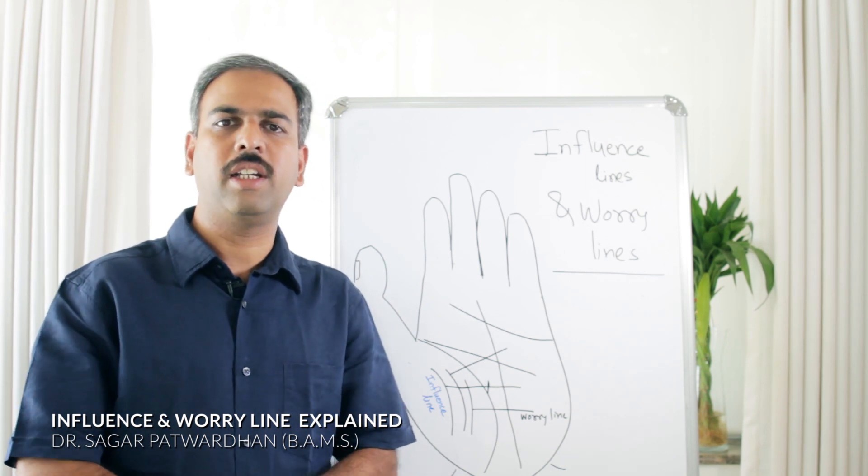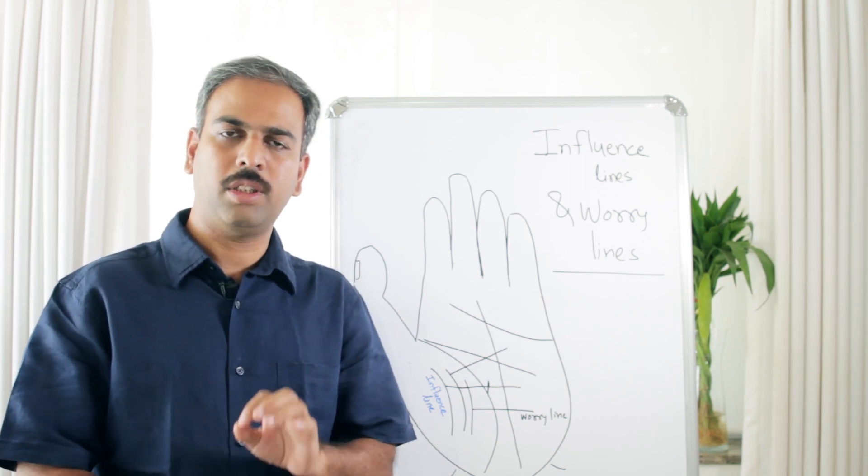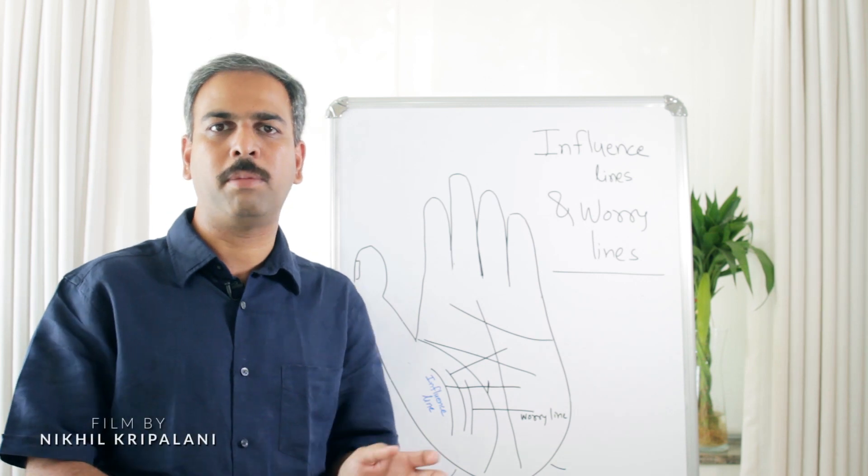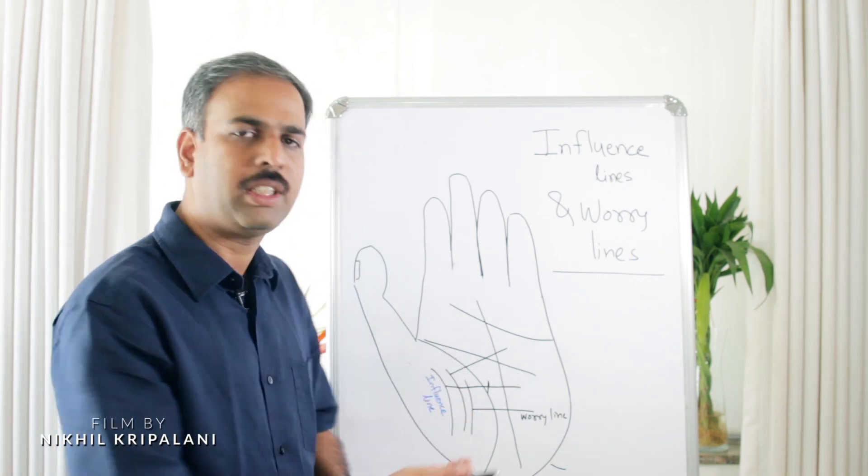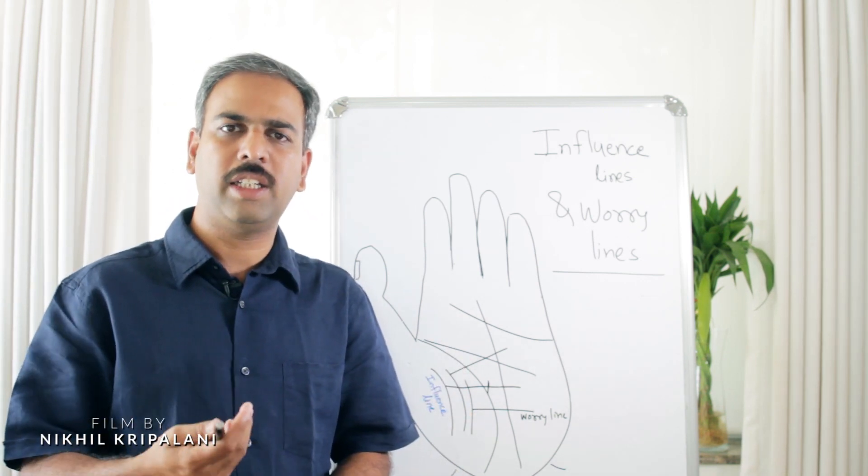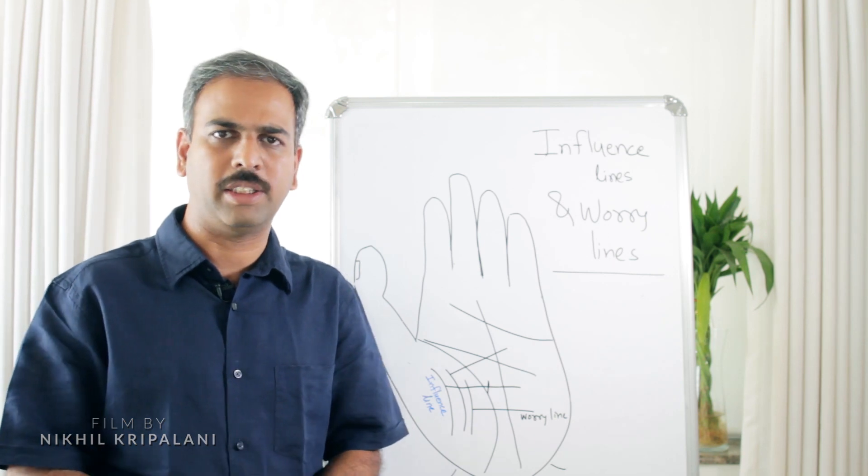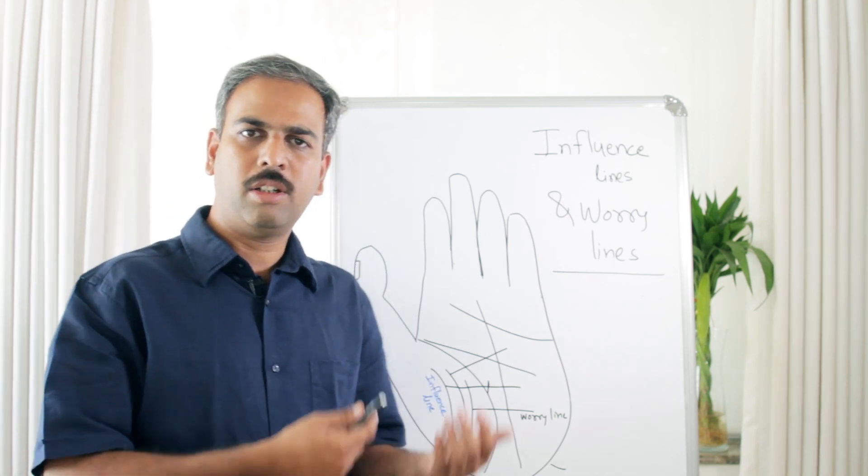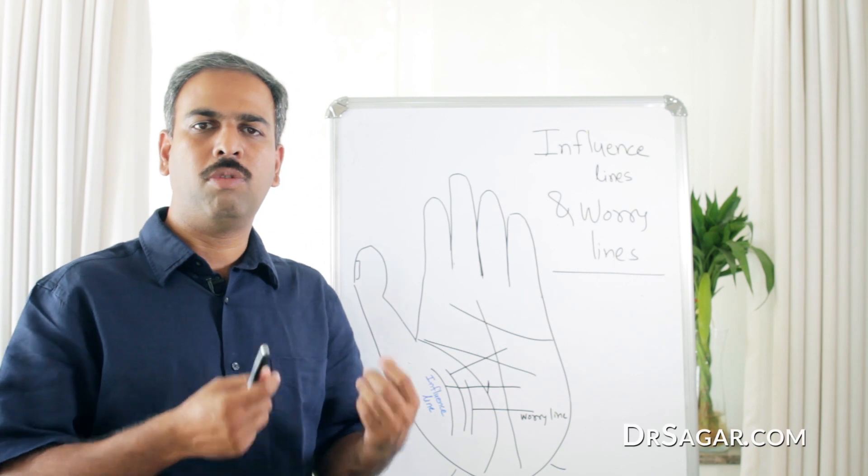These are Secondary Lines, but they have as much importance as Primary Lines. The primary lines we see are Fate Line, Heart Line, Head Line, and Life Line. First, we will see what these secondary lines indicate.